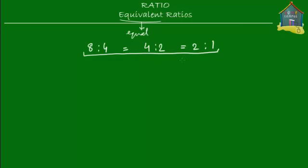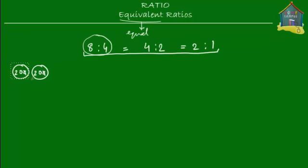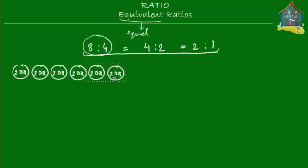But how do you know these are equal to each other? Let's prove that. We're going to start with the ratio 8 to 4 and prove it's equal to 4 to 2 and also to 2 to 1. So let's take 8 of a certain thing and 4 of a certain thing — say, coins. Let's take 20-cent coins, and I'm going to make 8 of these.